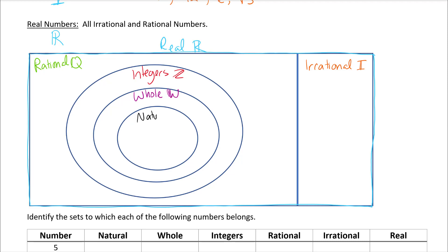Some examples: natural numbers are 1, 2, 3, and so on. Since the natural numbers circle sits inside the whole number and integer circles, the number 1 is a natural number, a whole number, an integer, a rational, and a real. Zero is the only number that belongs exclusively to the whole number category — zero is whole, integer, rational, and real, but not irrational.